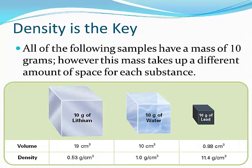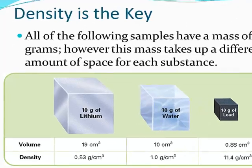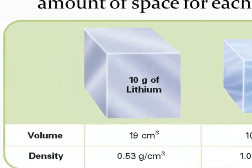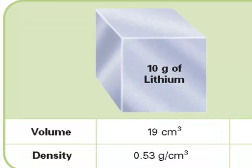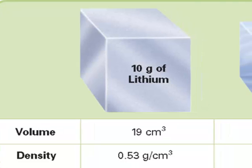All of the following samples shown in this diagram have a mass of 10 grams. However, this mass takes up a different amount of space for each substance. Notice that the metal lithium takes up the most space of the three substances shown. Its volume is 19 cubic centimeters for those 10 grams, giving it a density of only 0.53 grams per cubic centimeter.